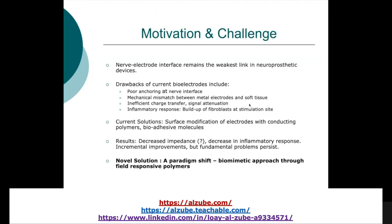That is one of the biggest challenges — why we would like to create a polymer-like electrode rather than a metal electrode. Current bioelectrodes have poor anchoring at the nerve interface. We would like to develop an electrode that can achieve attachment and adhesion to the nerve without damaging it. If anything touches a neuron, it immediately goes to controlled apoptosis or damage, which is a big problem. So we would like to generate an electrode that has adhesive properties without damaging the neurons.